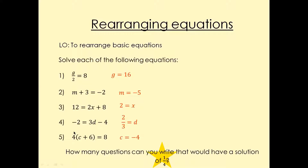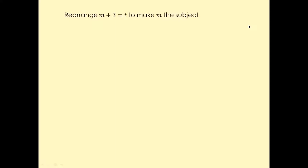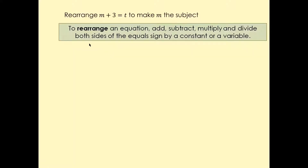And here in this case, you have to expand the bracket first, and rearrange to find c from there. So always read the question properly — that's the key thing. So m plus three equals t. We want to make m as a subject of this formula. To rearrange, add, subtract, multiply and divide both sides of the equal sign by a constant or a variable.